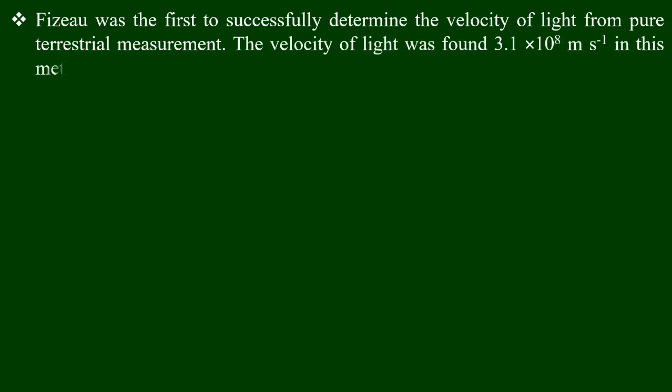This was the first successful measurement of the velocity of light from a terrestrial measure. The velocity of light was found to be 3.1 × 10⁸ meters per second using this method.